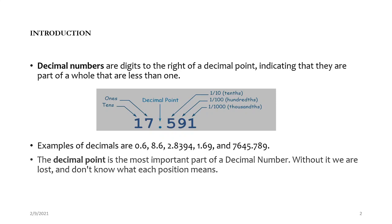Decimal numbers are parts of a whole that are less than one. If we look at the number 17.591, this is a decimal point. The number 7 is the units or ones place, the number 1 is the tens place. The numbers to the left of the decimal point are greater than one. The numbers 5, 9, 1 are the parts of this number that are less than one — that is what we call the decimal numbers.